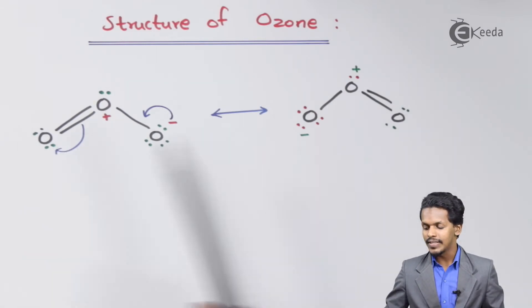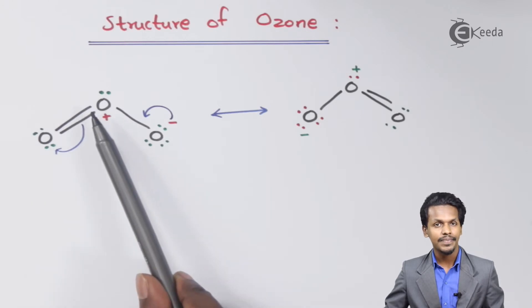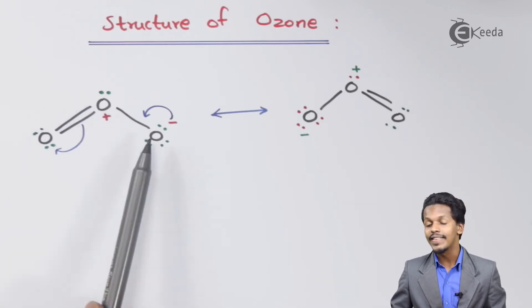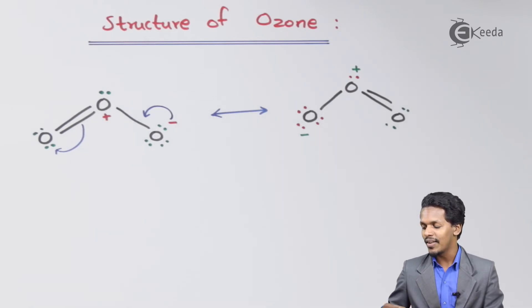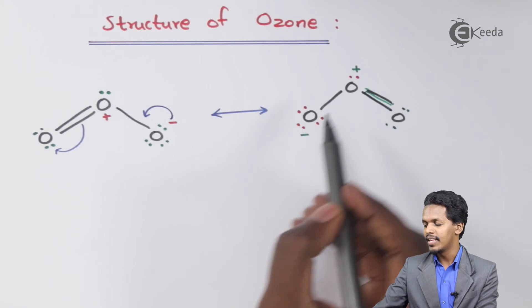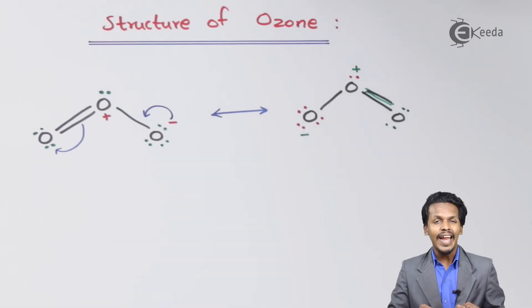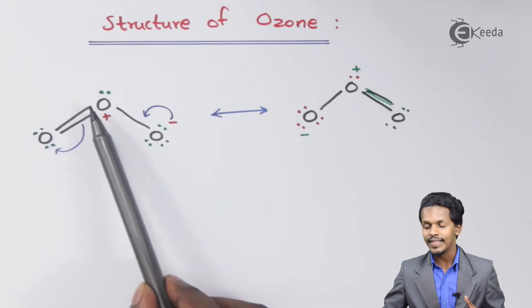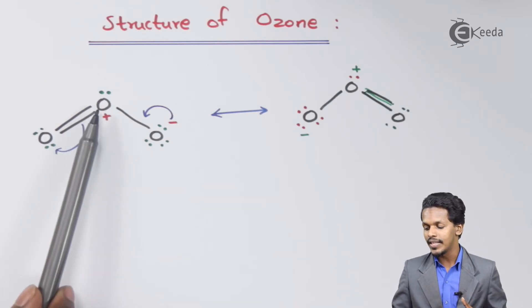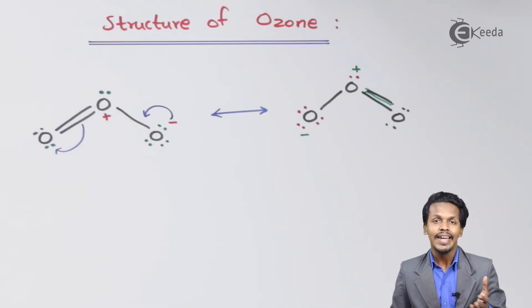So therefore, if you observe these bonds, then we will get to know that there is double bond between this oxygen and this oxygen. And there is a single bond between this oxygen and this oxygen. So if we talk about the resonance also, so here we can find a double bond, and here we can find a single bond. So that means that the distance between these two, or the bond length between this oxygen and this oxygen, and the bond length between this oxygen and this oxygen, they would be different.